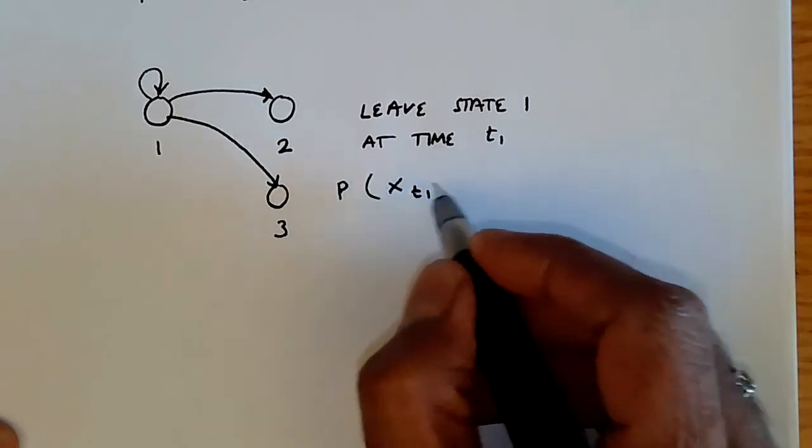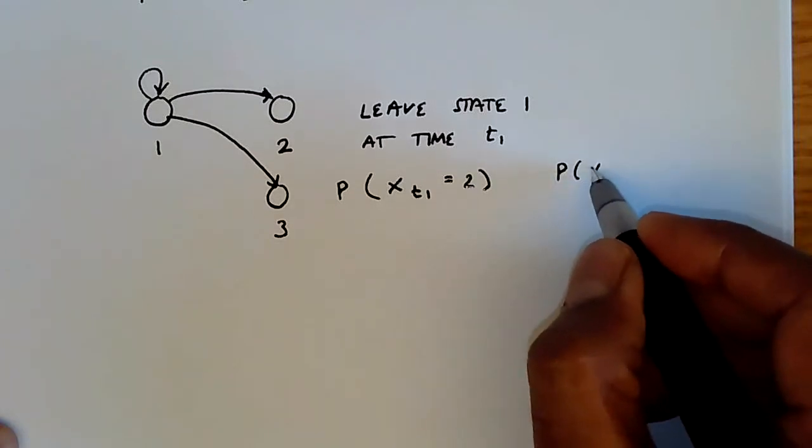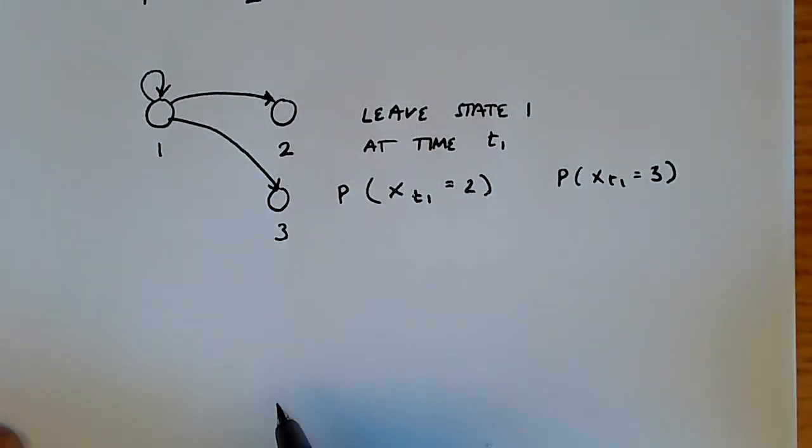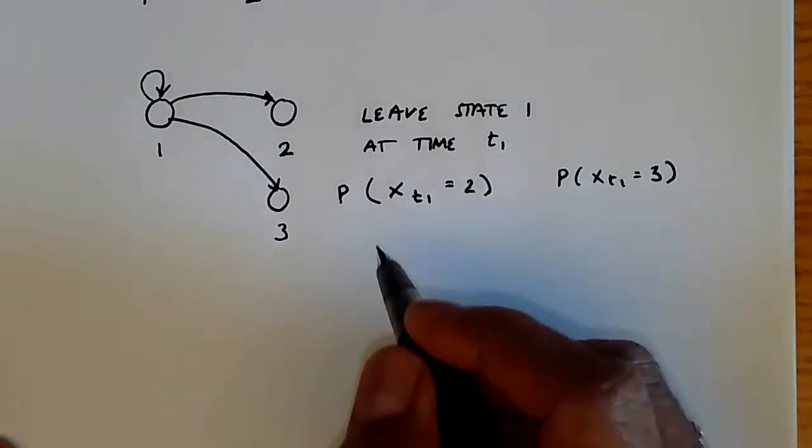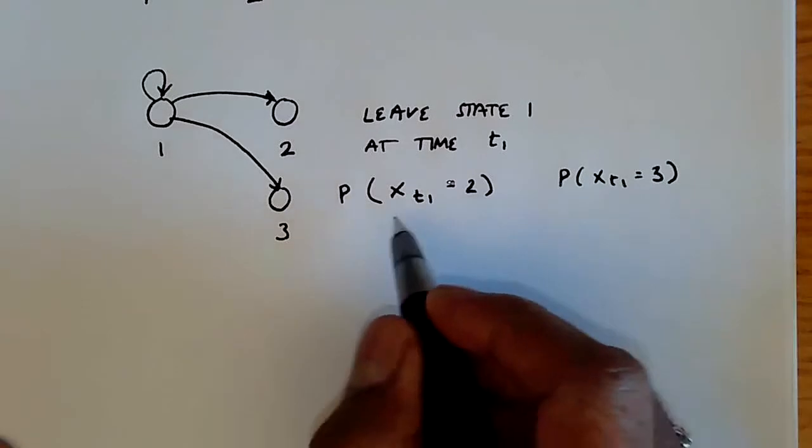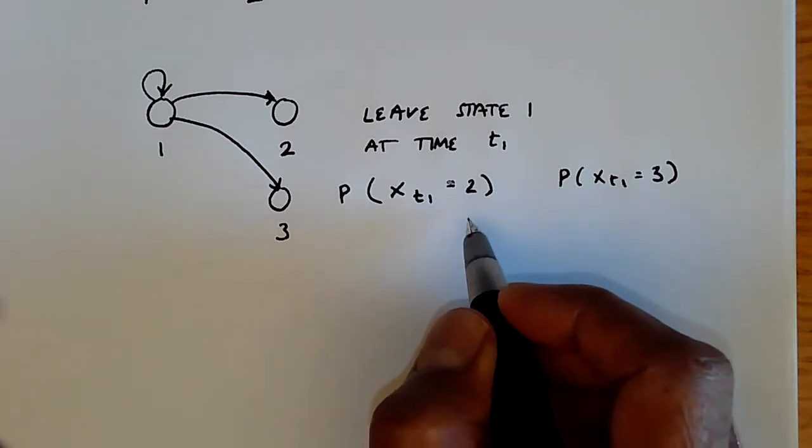And we have some probability that X_{T1} equals two and some probability that X_{T1} equals three. So this looks very much like the discrete time case where we say probability of X_2 equals two, probability X_2 equals three, except that we're now going to index it by the time instant at which the transition happened.